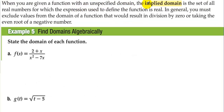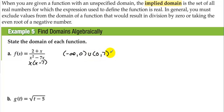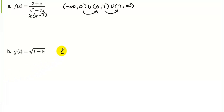When you are given a function with an unspecified domain, the implied domain is the set of all real numbers for which the expression used to define the function is real. In general, you must exclude values from the domain that would result in division by zero or taking the even root of a negative number. State the domain of each function. For the first, we have negative infinity to zero union with zero to seven, then seven to infinity — we skip over zero and seven, the two numbers that make the denominator zero. For letter b, t minus five must be greater than or equal to zero, so t must be greater than or equal to five. The domain is five to infinity, with a bracket to include five.